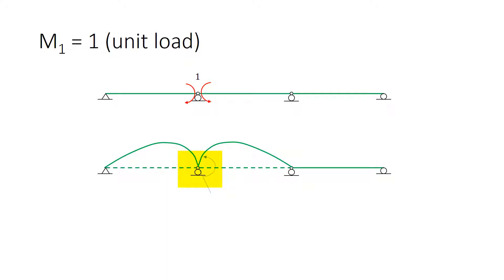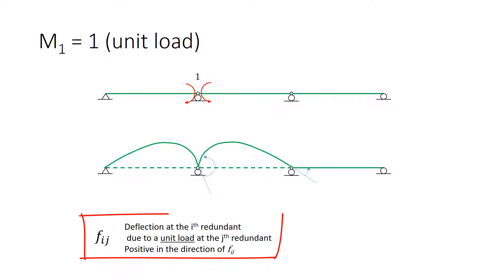One of the angles is shown right here. If we continue the slope for each of the two segments, the angle of interest is the angle between those two slopes. In reality, that should be zero. For the other support, the angle of interest is shown there. Let us introduce the formal notation. We will call each of these deformations F sub ij. And F sub ij is the deflection at the i-th redundant due to a unit load at the j-th redundant.